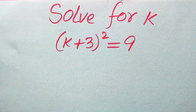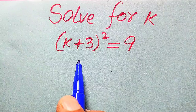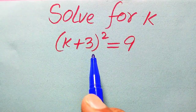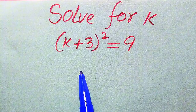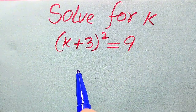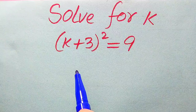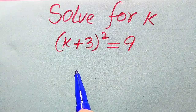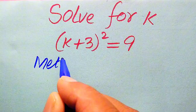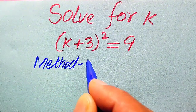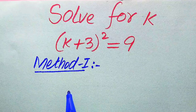Hello everyone. We will solve this problem for the values of k if we have (k + 3)² = 9. We will solve for all the values of k, and at the last we will verify which values are solutions and which are extraneous roots. We will solve this problem using two methods. If you have any other method in mind, please don't hesitate to write it in the comment section.